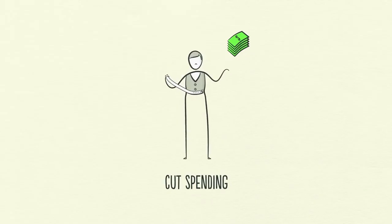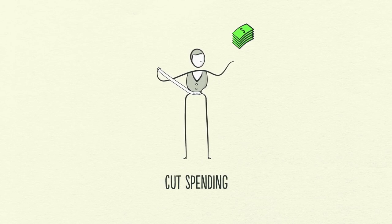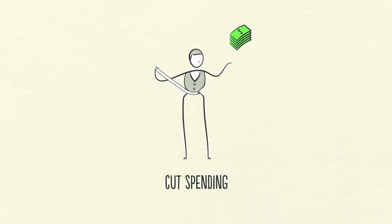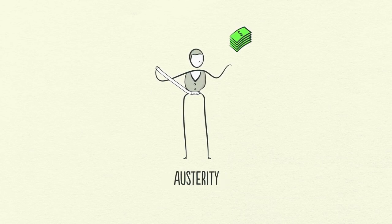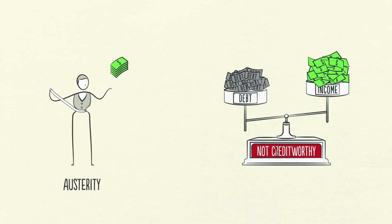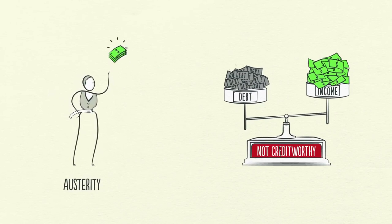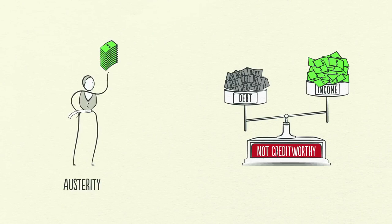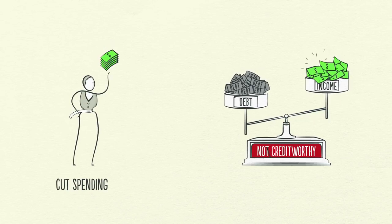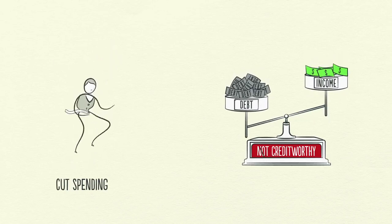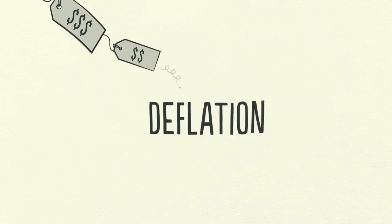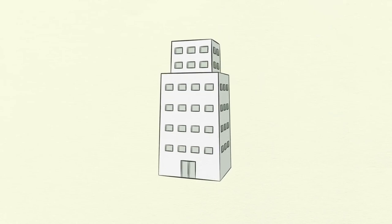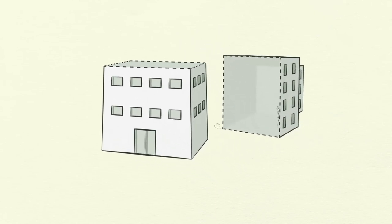Usually spending is cut first. People, businesses, and even governments tighten their belts and cut their spending so that they can pay down their debt — this is often referred to as austerity. When borrowers stop taking on new debts and start paying down old debts, you might expect the debt burden to decrease. But the opposite happens: because spending is cut and one man's spending is another man's income, incomes fall faster than debts are repaid, and the debt burden actually gets worse. This cut in spending is deflationary and painful — businesses are forced to cut costs, which means fewer jobs and higher unemployment.